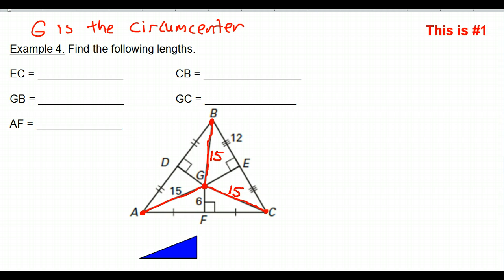The distance to the vertices should all be the same, so that gives me three values right there. GC is 15, GB is 15. Now to find anything else, we're going to have to use the Pythagorean Theorem. All over the place we can use the Pythagorean Theorem to solve these problems. For example, if I want to find AF, I want you to focus on the triangle that I'm about to color in blue.